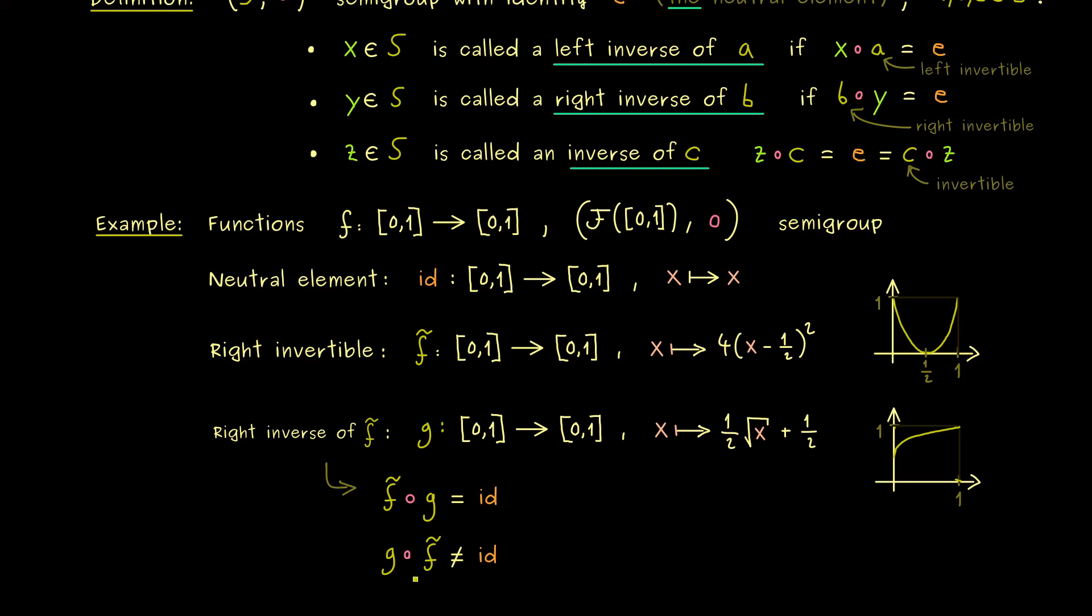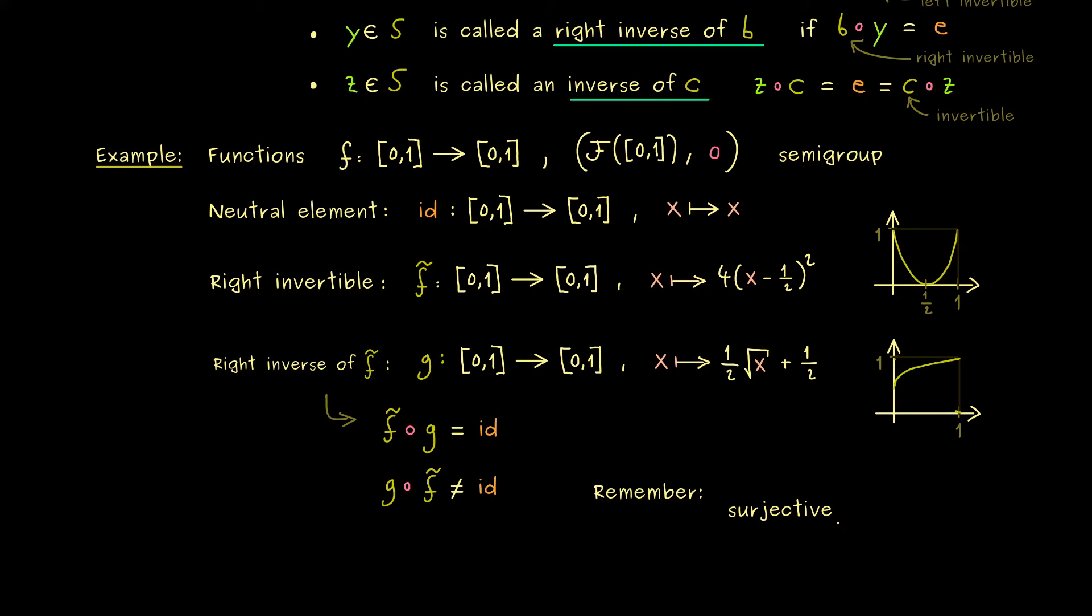In fact you should note that we have the right inverse here because f tilde is surjective. So therefore please remember that surjective means we have a right inverse. So surjective and right invertible mean the same thing in this context.